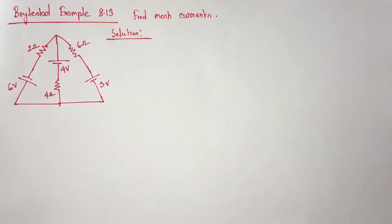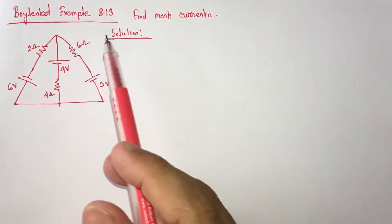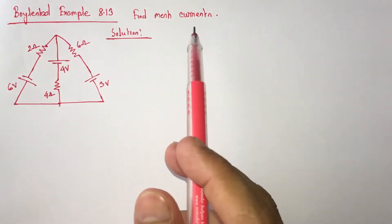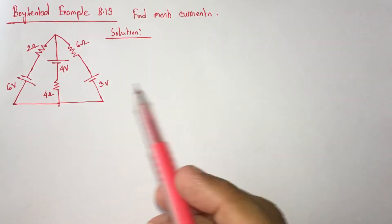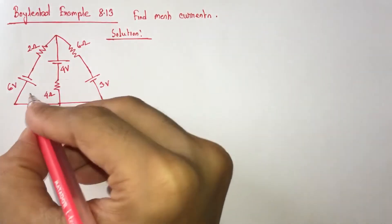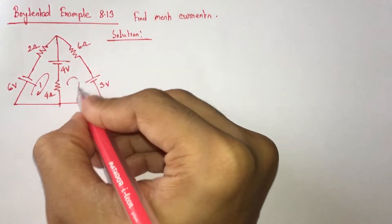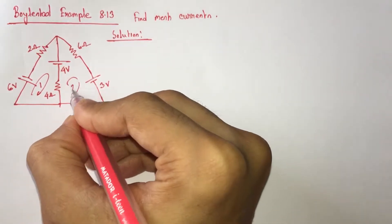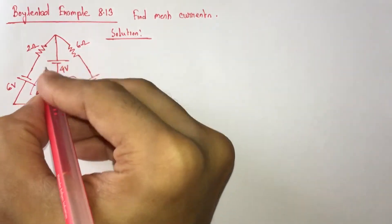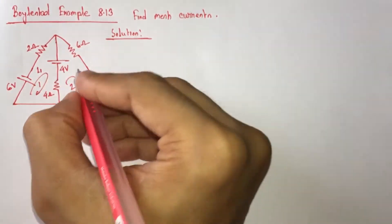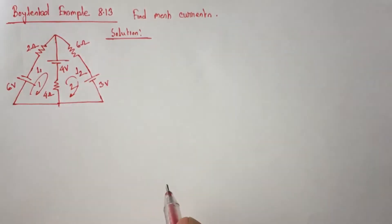Hi viewers. We will solve example 8.13 from Boylestad. Here we have to identify mesh currents for the circuit. Let this be loop 1 and this be loop 2, and let the current of loop 1 be I1 and the current of loop 2 be I2.